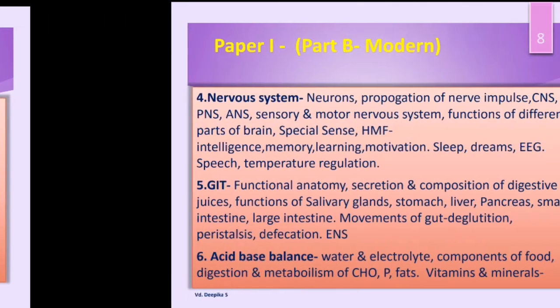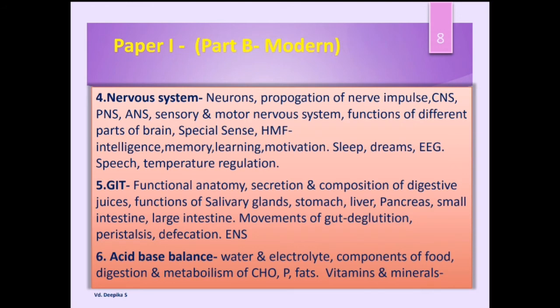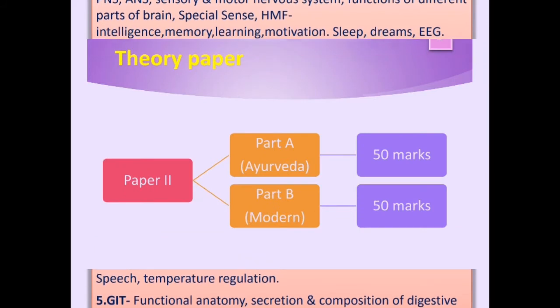Next is the nervous system, covering types of neuron, description of neuron, propagation of nerve impulse, sensory system, motor system, and functions of different parts of the brain. We will also see special senses and higher mental functions like intelligence, memory, and learning. After nervous system, we will study GIT (gastrointestinal tract), including functional anatomy, composition of digestive juices, functions of salivary glands, stomach, liver, pancreas, and movements of the gut. Then we cover acid-base balance, water and electrolyte balance, components of food, and digestion and metabolism of carbohydrates, proteins, fats, and vitamins.